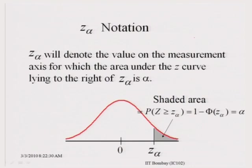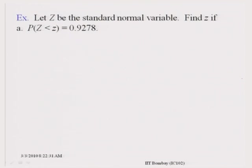Now we describe the Z-alpha notation, which will be frequently used in inference problems discussed later. Z-alpha denotes the value on the measurement axis for which the area under the Z curve lying to the right of Z-alpha is alpha. As you can see in this picture, if the area on the right of Z-alpha equals alpha, then the probability that Z is greater than or equal to Z-alpha is 1 minus the area on the left of Z-alpha, obtainable from the tables.